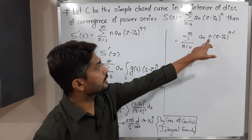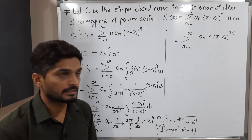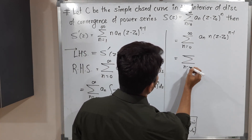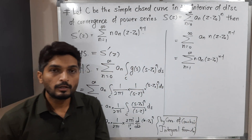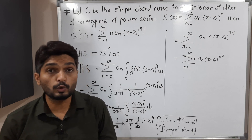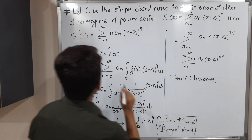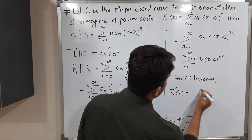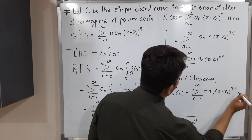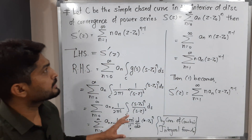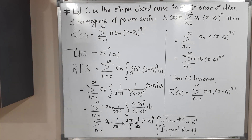Putting both sides back into equation one: the left hand side S'(z) equals the right hand side, which is the summation from n = 1 to infinity of n·aₙ·(z − z₀)ⁿ⁻¹. This proves the theorem, also known as term-by-term differentiation of a power series. Thank you.